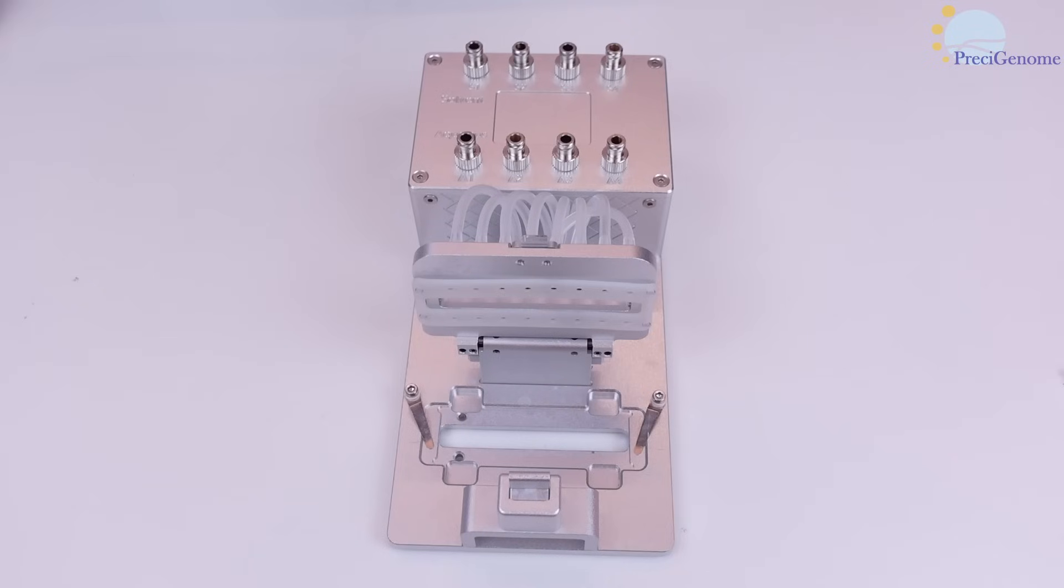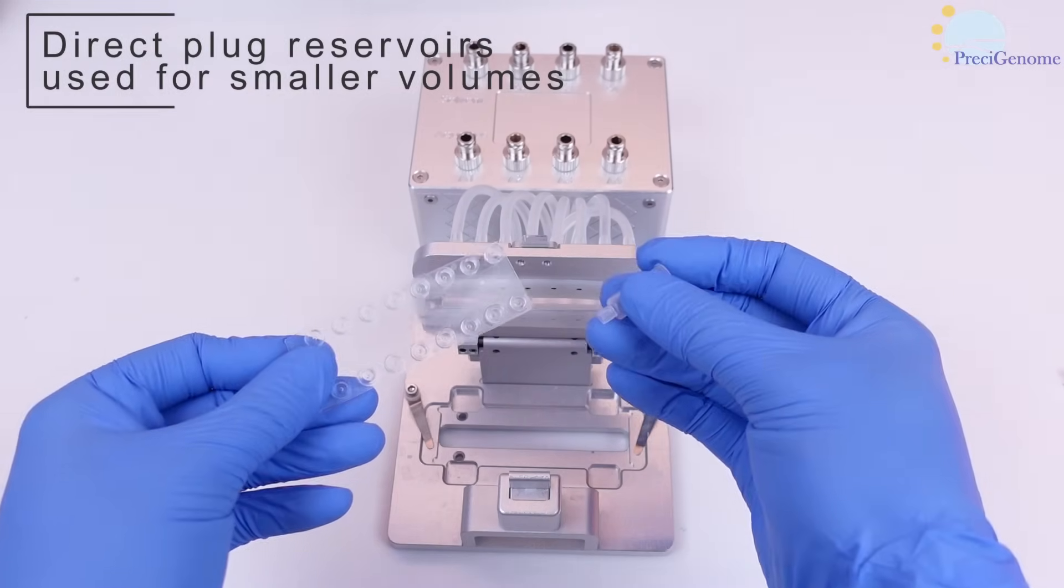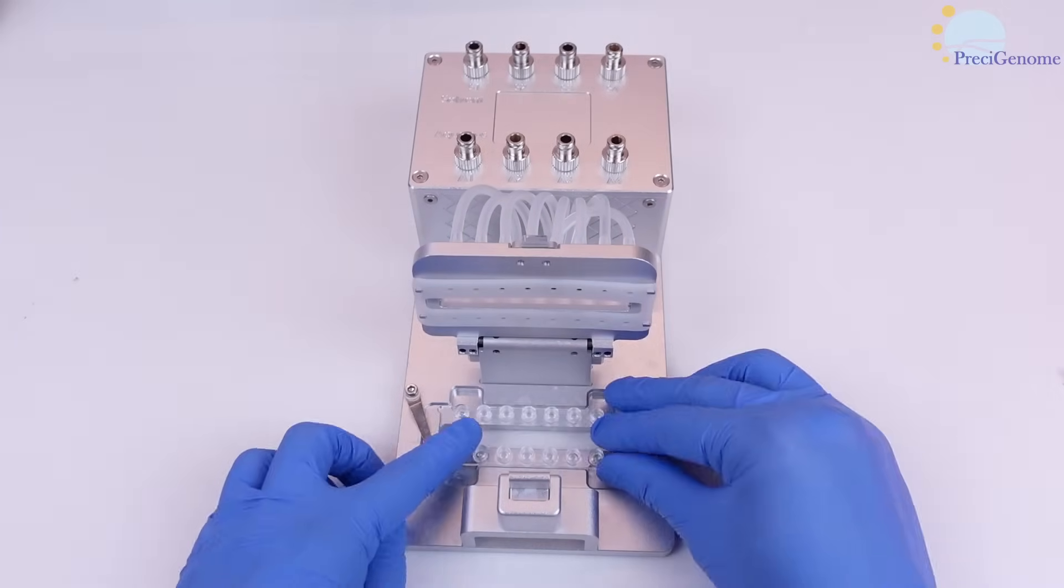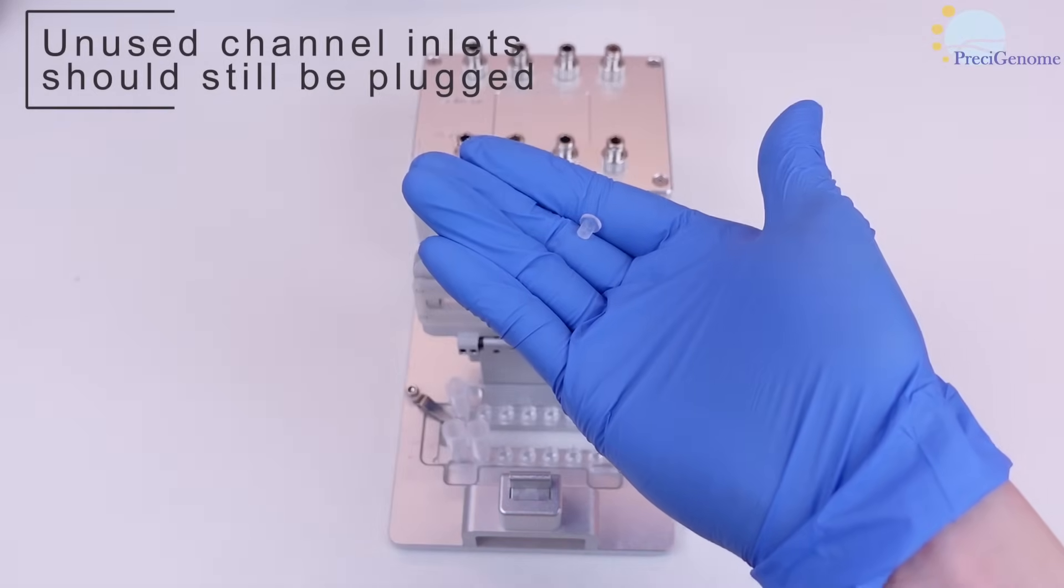For small volume production up to 0.5 mL, Precigenome offers a separate microfluidic mount. This model uses luer reservoirs which connect directly to the chip. You may connect them to both outlets and inlets. Don't forget to plug any unused outlets.